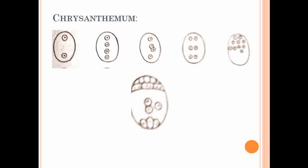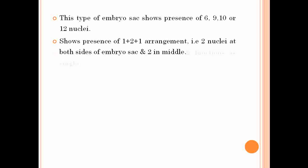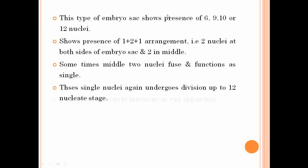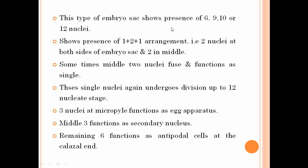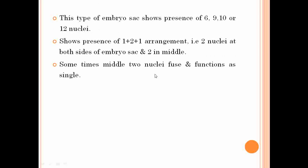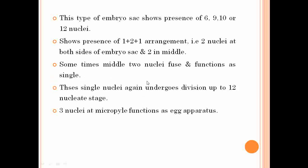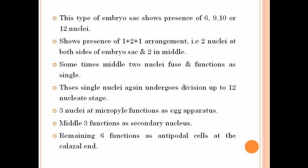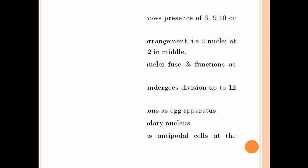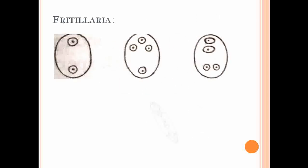The Chrysanthemum type shows a 1+2+1 arrangement, with either 6, 9, 10, or 12 nucleated embryo sacs. The next type is the Fritillaria type of embryo sac.